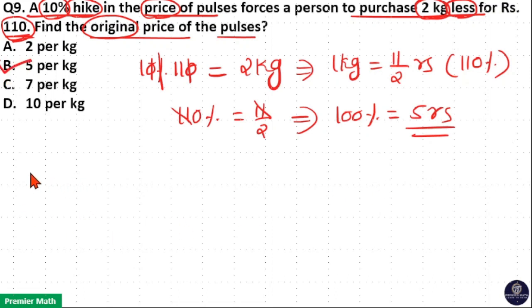You can do this question in ratio method as well. Here increment is 10%. Increment means plus 10% means 10 by 100. Now plus 1 by 10 means if 10 part is the original price, 1 part is the increment. Then 10 plus 1, 11 part is the new price.